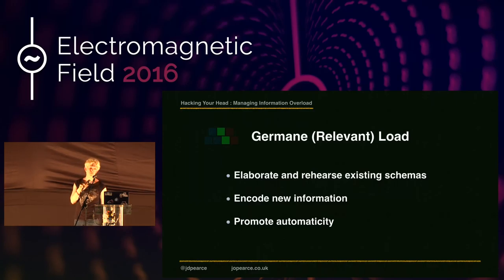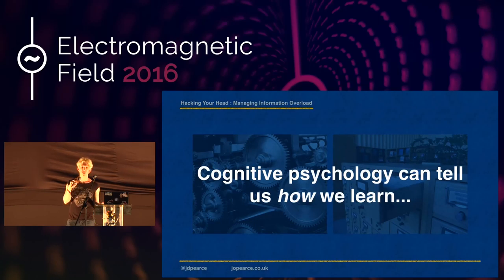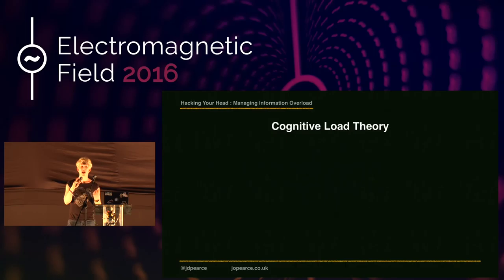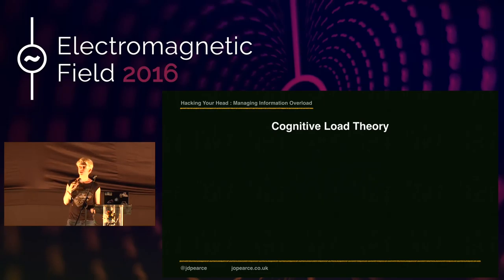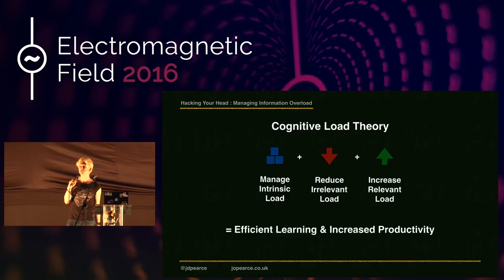To sum up: we constantly need to learn. Cognitive psychology tells us how we learn, but also that there are limits to our ability to learn. Cognitive load theory helps us work within those limits. If we manage intrinsic load by breaking large tasks into smaller ones, reduce extraneous load by eliminating irrelevant tasks and distractions, and increase germane load with appropriate repetition and varied learning contexts, we promote efficient learning, improve productivity, and escape the horrors of information overload.